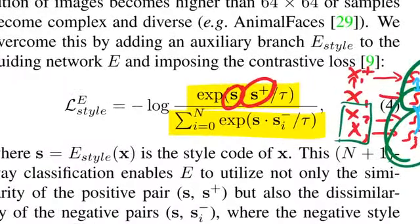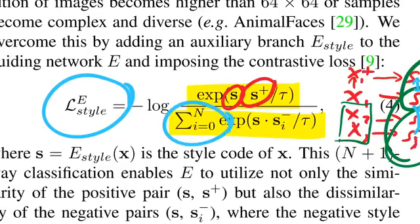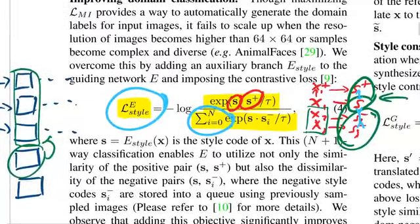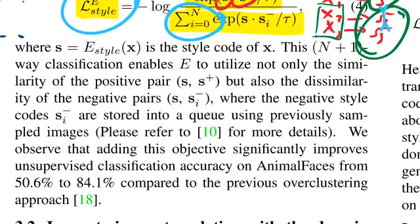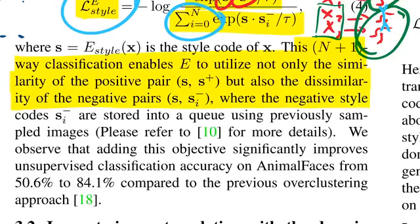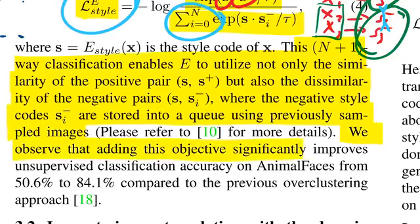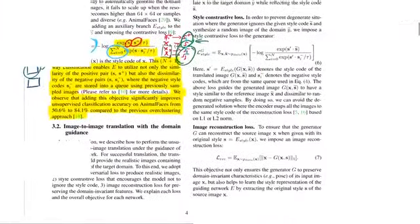This style loss guarantees that each image has a distinct style that is robust to augmentation transformations. It doesn't directly care about the domain — it's computed per image without knowing which domain other images belong to. But as we'll see, the style does capture something of the domain as well. Adding this objective significantly improves unsupervised classification accuracy compared to the previous over-clustering approach alone.